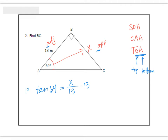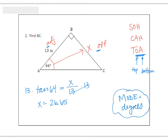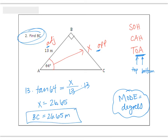Solve for X by multiplying by 13. Then grab your calculator and type in 13 tangent 64. If your calculator is in the correct mode, you should get 26.65. If you're not getting that, your calculator might not be in the right mode — you may have to find the mode button and change it to degrees, because our angle is measured in degrees. They asked us to find BC, so BC equals 26.65 meters. That is our final answer.